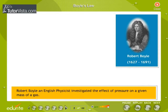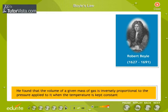Boyle's Law: Robert Boyle, an English physicist, investigated the effect of pressure on a given mass of gas. He found that the volume of a given mass of gas is inversely proportional to the pressure applied to it when the temperature is kept constant.